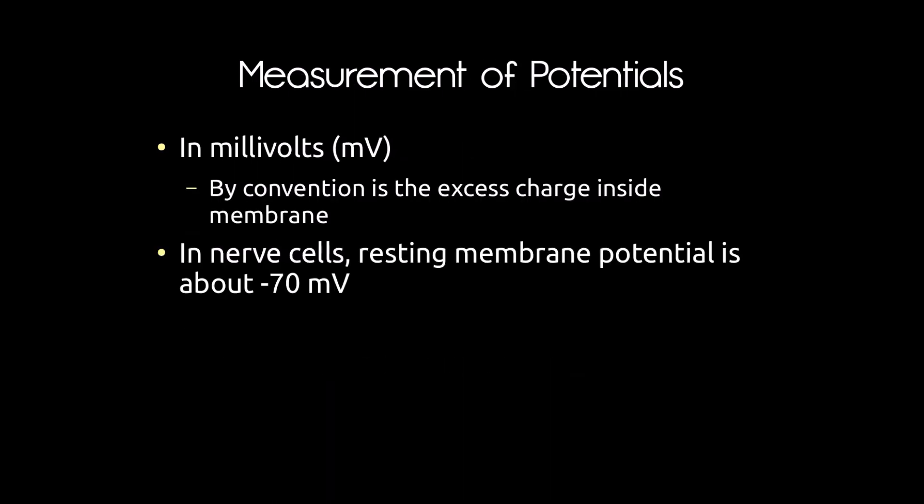When measuring potentials, we use millivolts. By convention, the sign reflects whatever excess charge you have on the inside of the membrane. If we have more negative charges on the inside, it's a negative value. In nerve cells, the resting membrane potential is about negative 70 millivolts. This will become a landmark we keep coming back to as we talk more about nerve cell physiology.